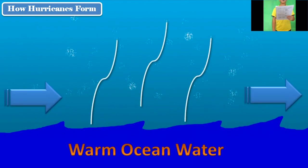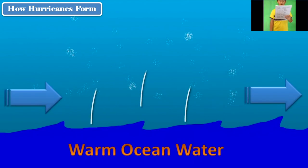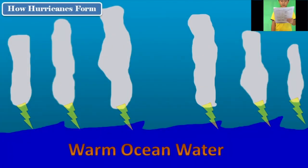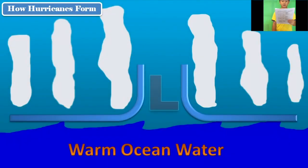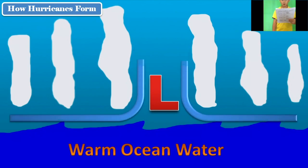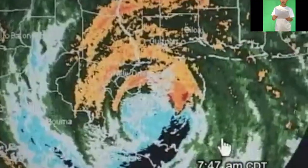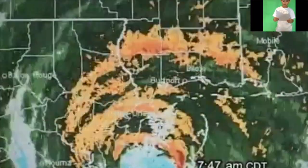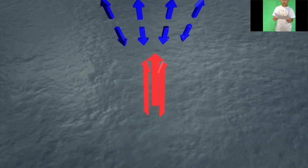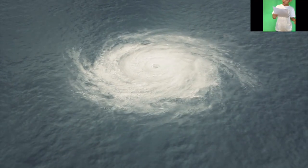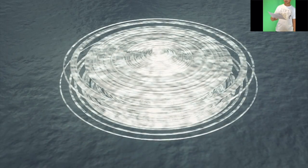They form only over warm ocean waters near the equator. The warm moist air over the ocean rises upward from near the surface. Because this air moves up and away from the surface, there is less air left near the surface. The warm air rises, causing an area of lower air pressure below. Air from the surrounding area with higher air pressure pushes into the low pressure area. Then that new air becomes warm and moist and rises too.